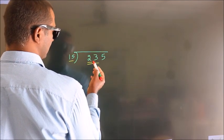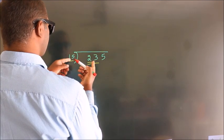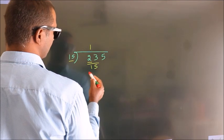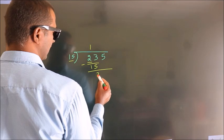23. A number close to 23 in 15 table is 15 once 15. Now we should subtract. We get 8.